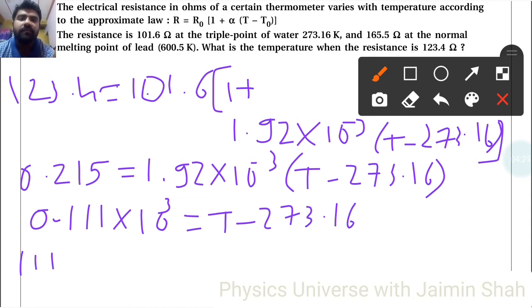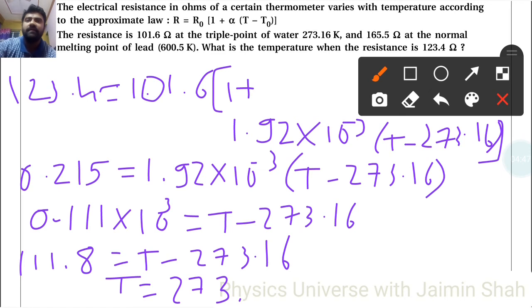So 111.8 = T - 273.16. Adding these values: T = 111.8 + 273.16 = 384.96 K. That is the temperature when resistance is 123.4 Ω.